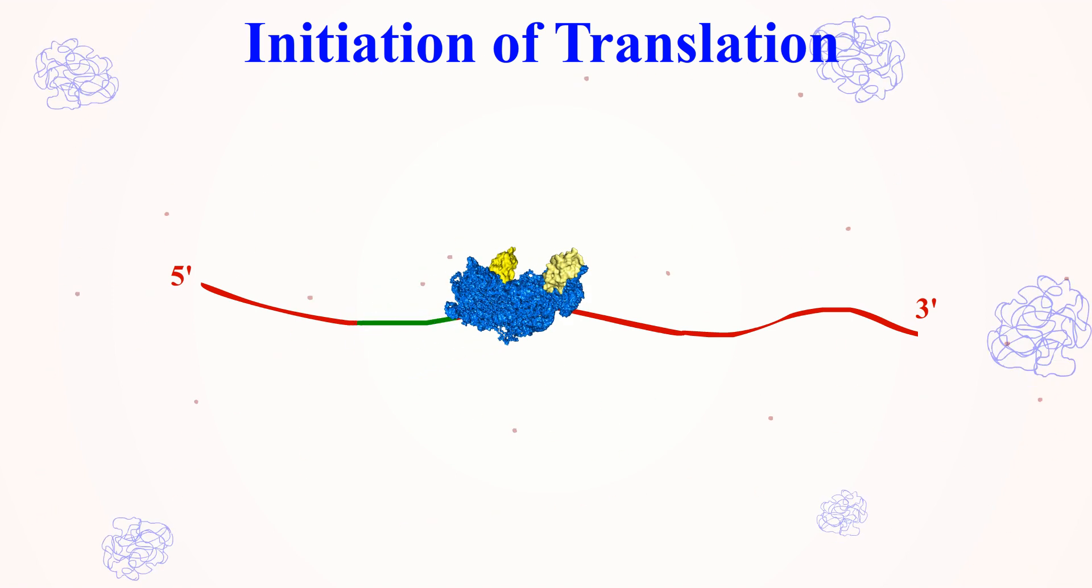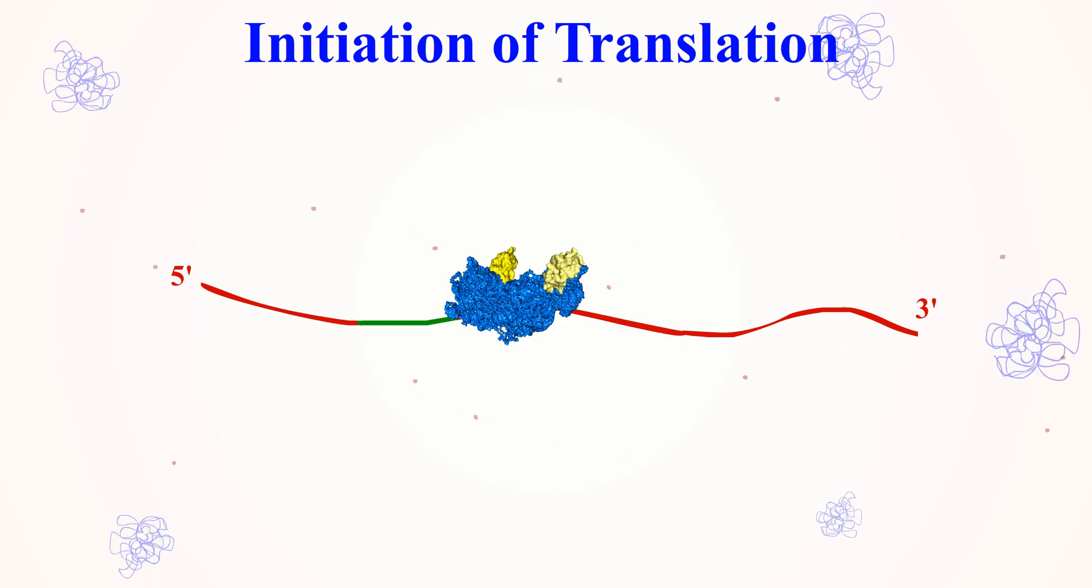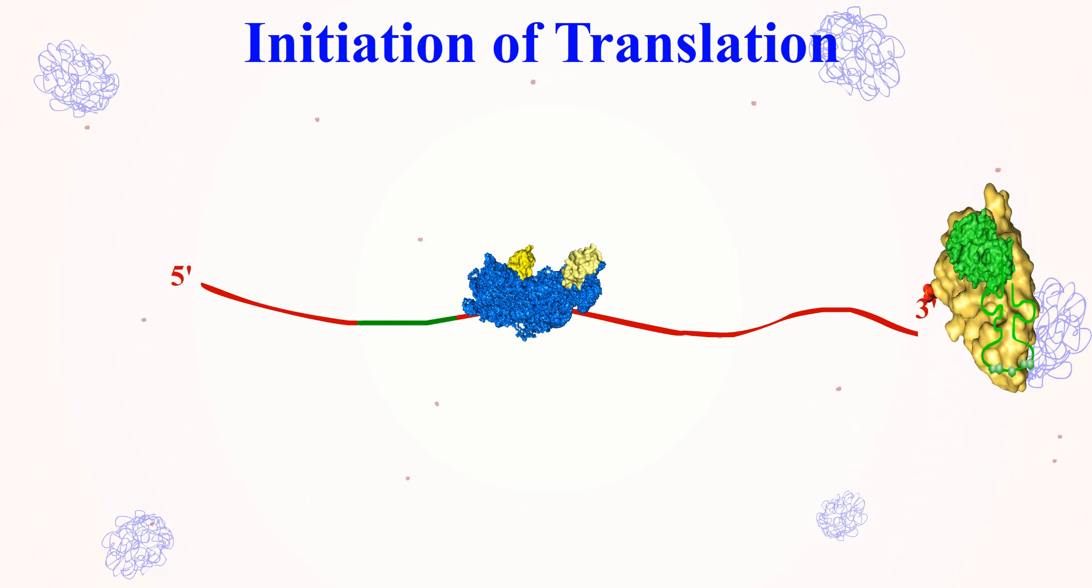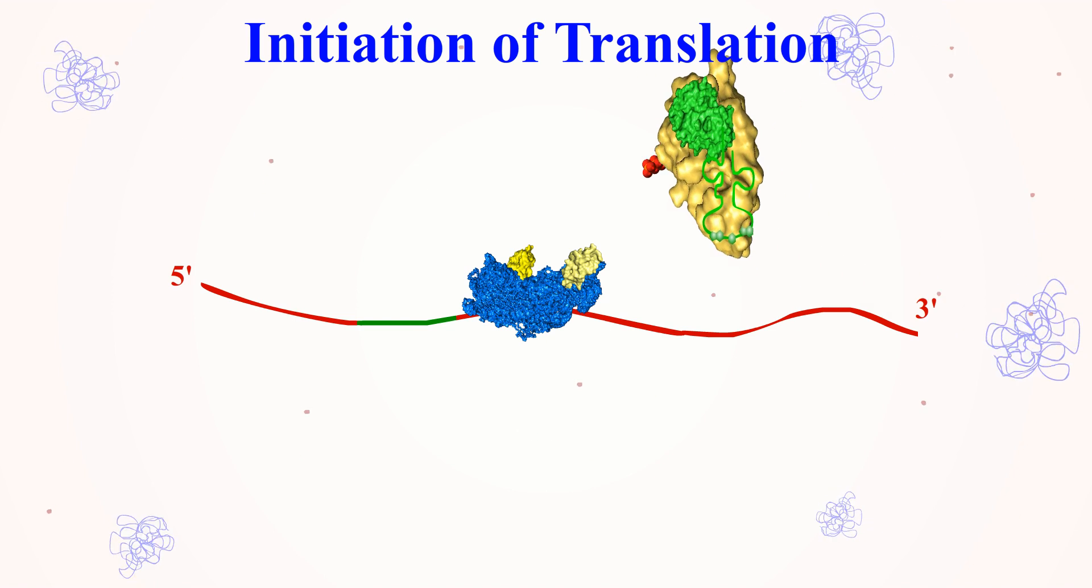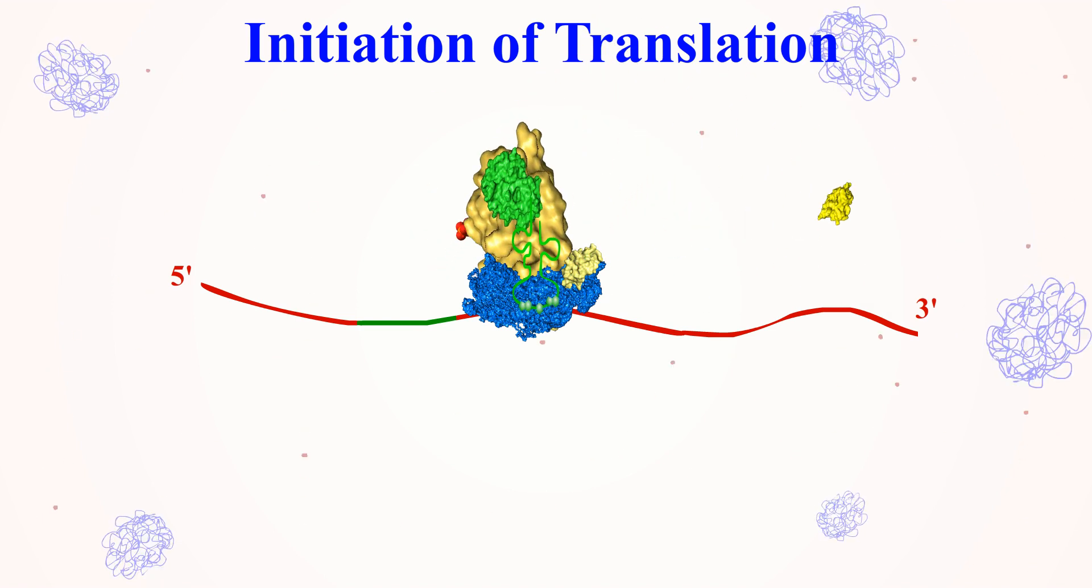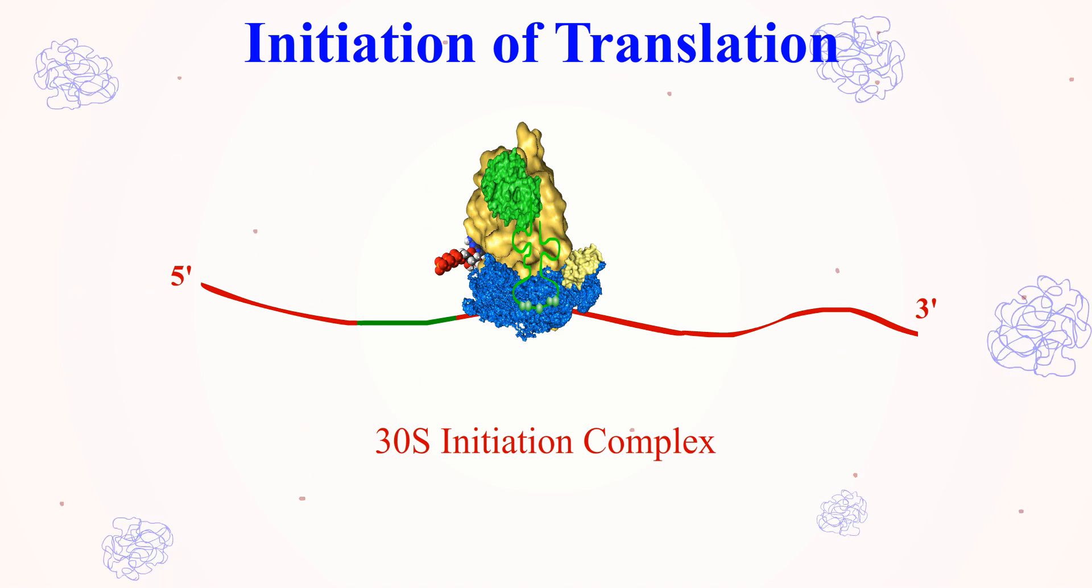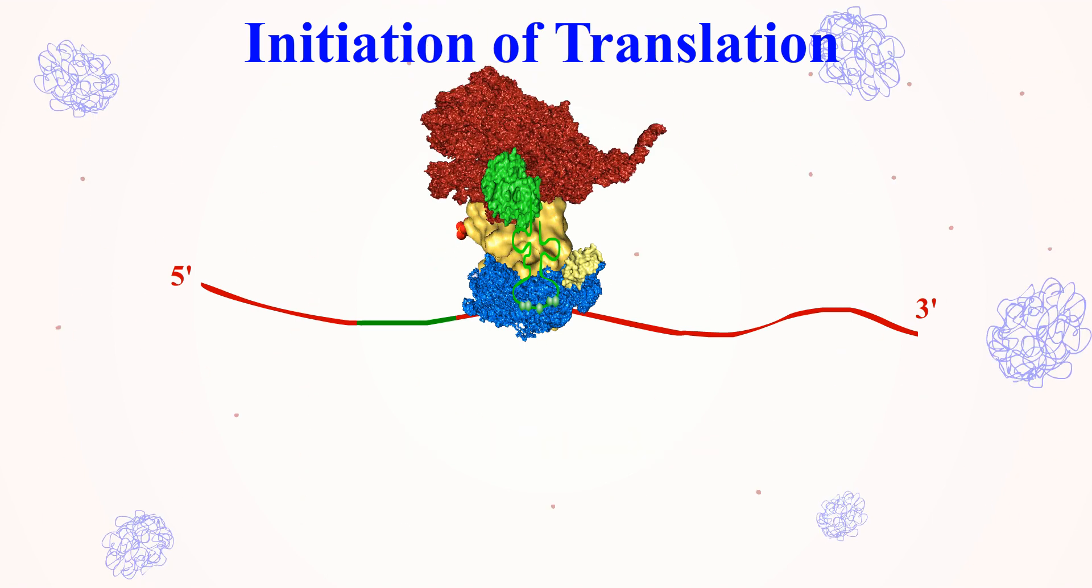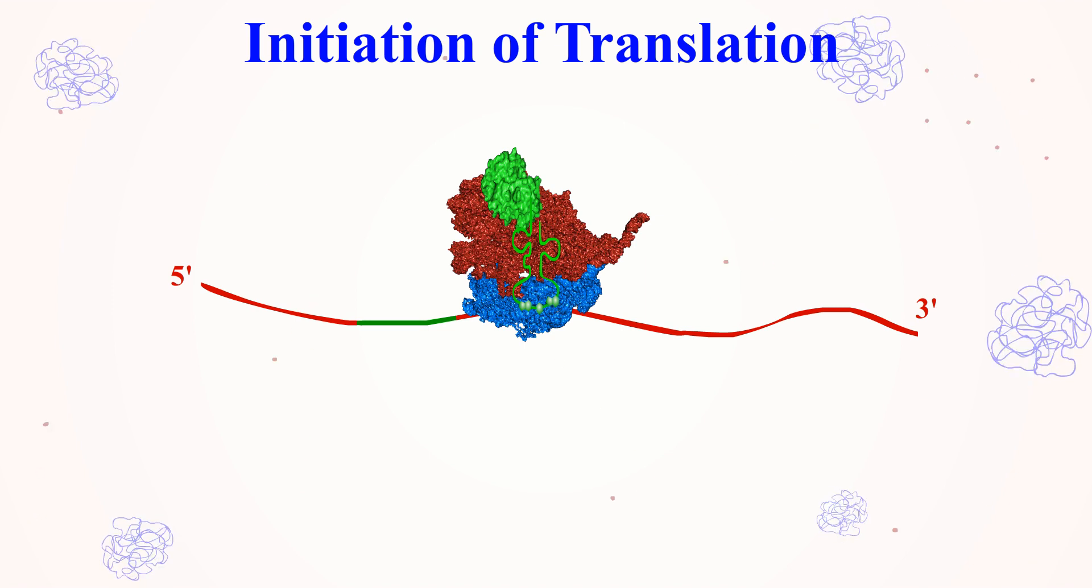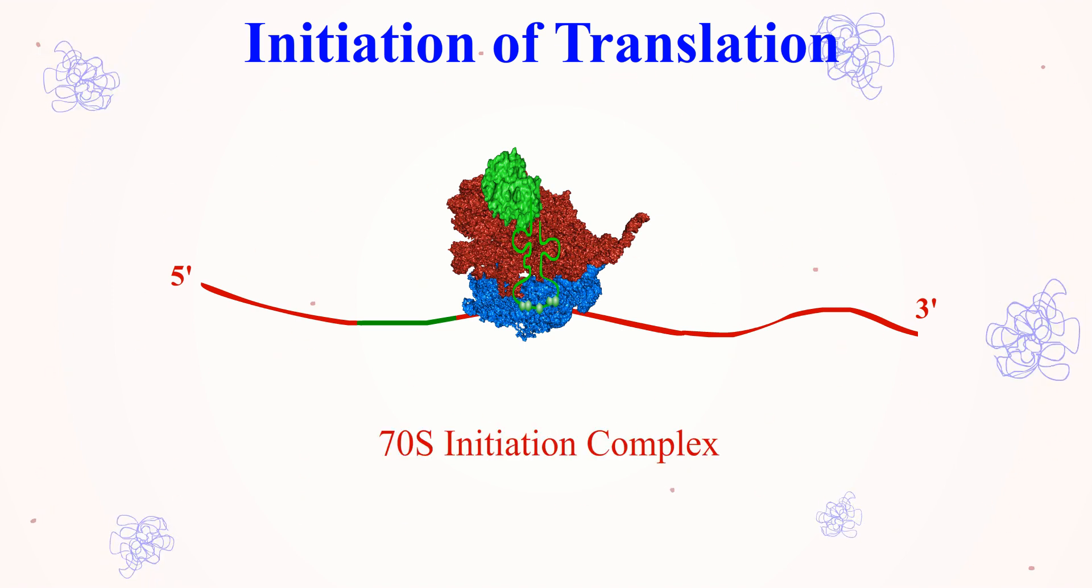This complex moves along the mRNA until it locates the AUG initiation codon. The N-formyl methionine-tRNA binds to the AUG sequence, along with IF2 and GTP, which causes the release of IF3. The complex now formed is known as the 30S initiation complex. The 50S ribosomal subunit now binds to the complex, along with the release of IF1 and IF2 and hydrolysis of GTP, forming the 70S initiation complex.